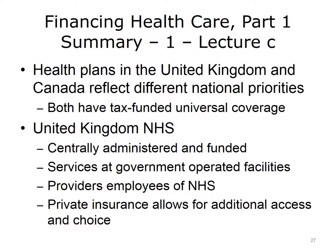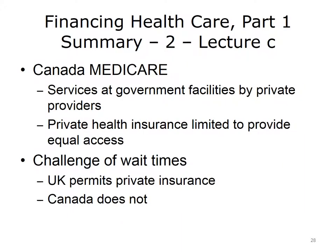This concludes Lecture C of Financing Health Care, Part 1. In summary, the public health plans in the United Kingdom and in Canada reflect the different social and political priorities of each country. Both the United Kingdom and Canada provide public health care coverage for their residents, funded primarily by taxes. The United Kingdom's multi-payer system is centrally funded and administered, and lets residents purchase private insurance to have greater choice and faster access to many health care services. Canada's single-payer systems are funded through federal and provincial taxes, and provinces and territories administer their own health care plans as long as they follow certain nationwide rules. Canada is concerned about providing equal access to all residents and permits residents to purchase private insurance only for services that the public plan does not cover. Both countries have worked to reduce long wait times for medical services in their public plans.